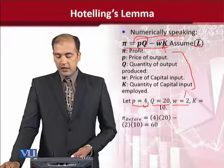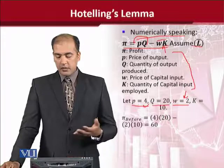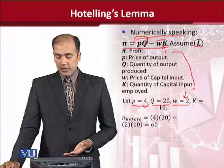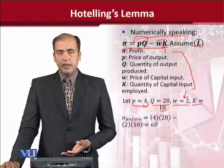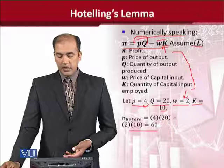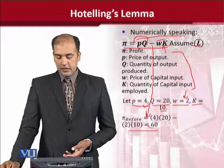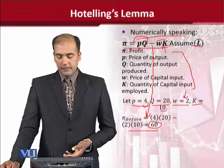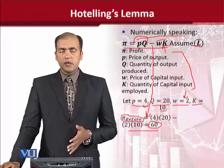Price of capital is 2, which should be a positive value, just like capital K is equal to 10. Now, these are the numerical values. If we put them into the profit function, we will get a result which is 60, and it is the level of profit before the change.